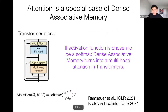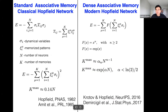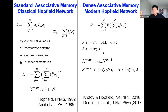Moving on to transformers: around 2020 people noticed that if one takes dense associative memory and instead of picking f(x) as a power function or exponential, picks it as the integral of the softmax — for physicists, softmax is just a Boltzmann distribution — you get something like log of the sum of exponentials. If you pick f in that form, dense associative memory identically reduces to the attention mechanism in transformers.